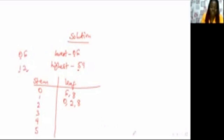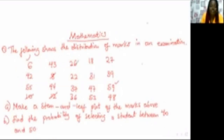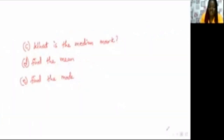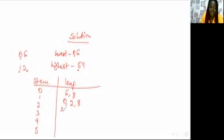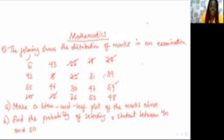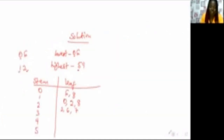Then for the twos column, we have 22, 26, and 27. So we fill in 22, 26, and 27. Then for the threes column, we have 31, 36, 37, and 39. So let's go and fill those in: 31, 36, 37, and 39.